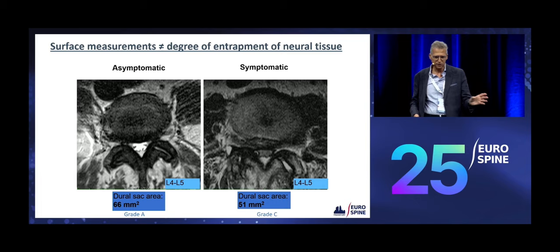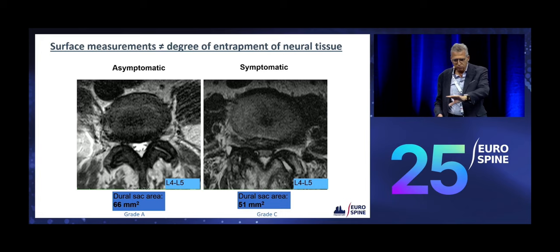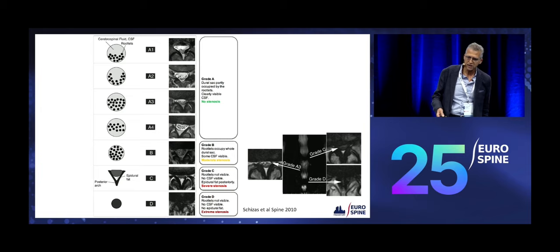Unfortunately, these surface measurements do not reflect the degree of entrapment of the neural tissue. You can see here on the left that this patient has 66 square millimetres, and you can see the rootlets very clearly. On the right-hand side you have a grade C, which means there is no CSF. All the rootlets are aggregated together and roughly the same surface area. So the left patient is asymptomatic, the right is symptomatic.